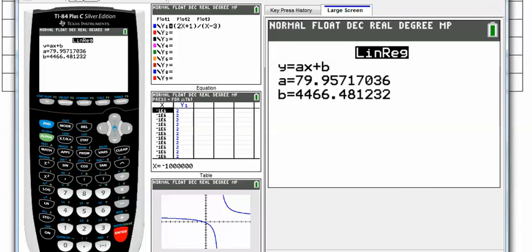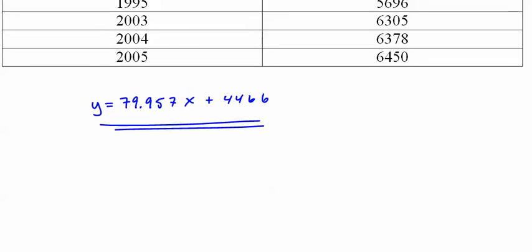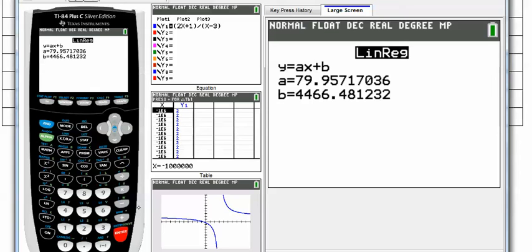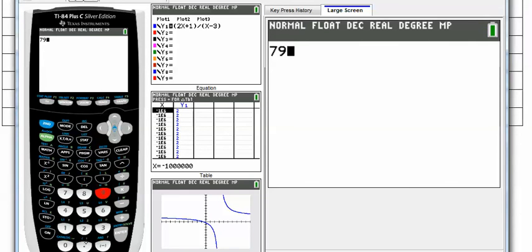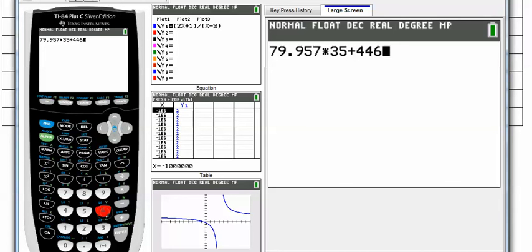So there it is. That is a linear model. Now we could also use this to do some work, but in this case—I lied, I guess I will tell you. What's the population today? Well, we would just say y equals 79.957 times—that's 25, this is the year 35—plus 4466.